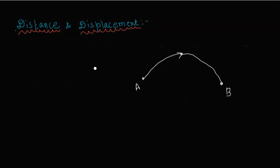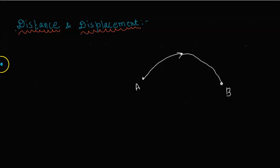Now, distance and displacement. If you look at this path, you can measure the distance. For example, this path is A-O-B. The total path traversed by a body is called distance. What about displacement?